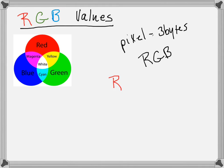For red, there are eight bits. Because the computer deals with binary, the amount of red produced by the pixel is given by a binary number. The most red you could have would be all ones, and we've talked about this — that decimal version would be 255. So 255 is the maximum amount of red a pixel can produce.